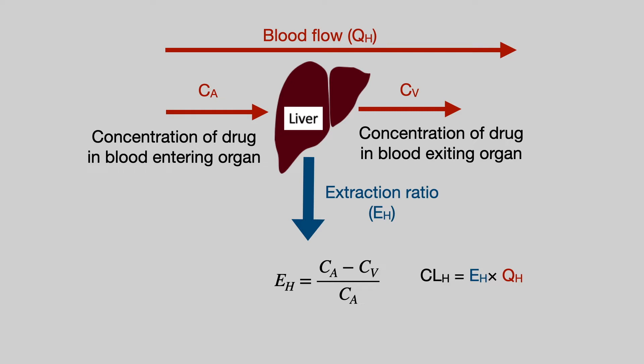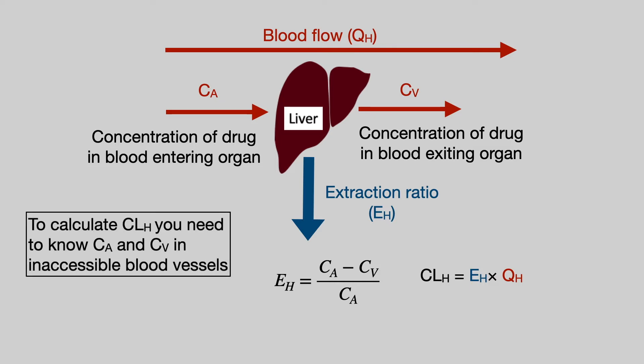We can now conclude that in order to calculate hepatic clearance, you need to know the drug concentration in the blood going into the liver and out of the liver. Those are inaccessible blood vessels — you can't make those measurements. So you can't measure hepatic clearance directly, but you can measure it indirectly, and we'll come to that in just a minute.